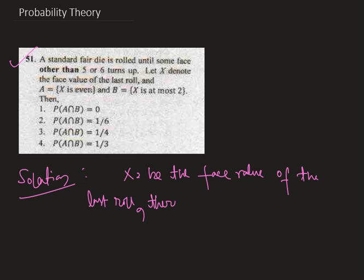Therefore, it cannot be 5 or 6, because if 5 or 6, whichever among 5 or 6 turns up, then this is not the last roll. Because in the first portion of the question we are told that a standard die is rolled until other than 5 or 6 turns up.